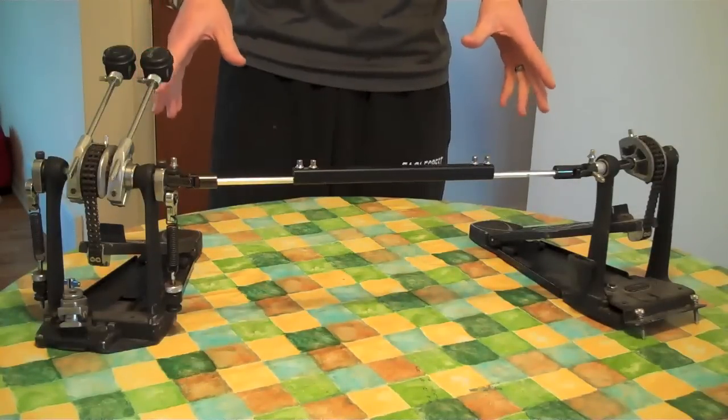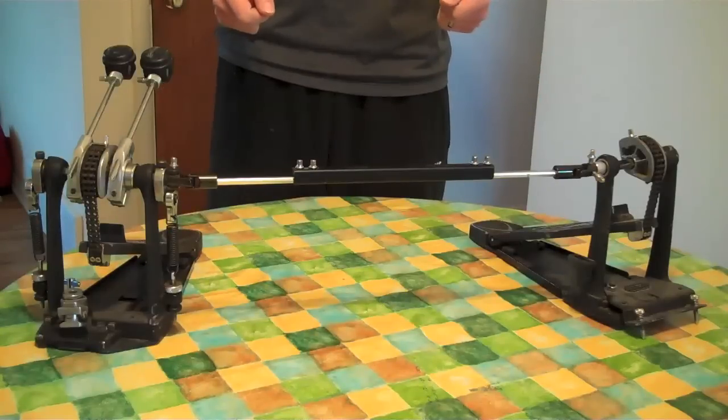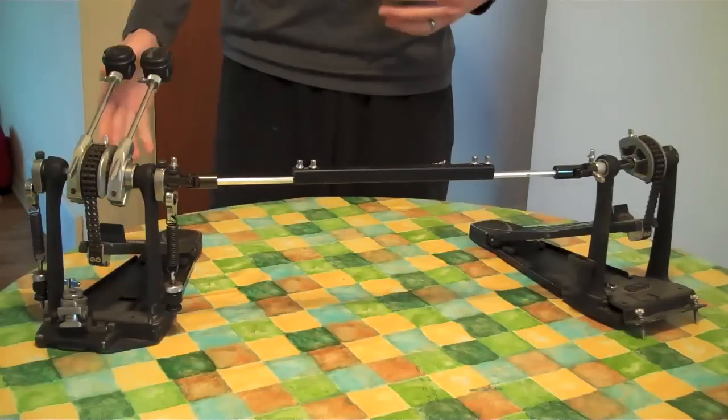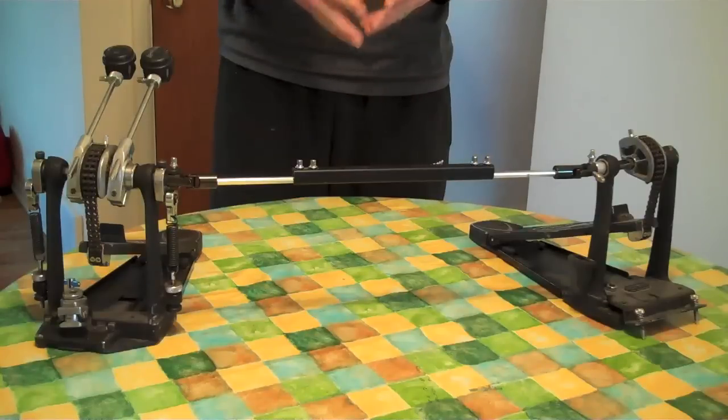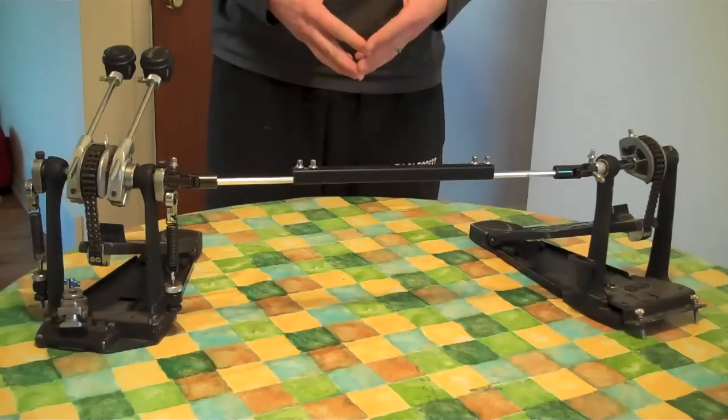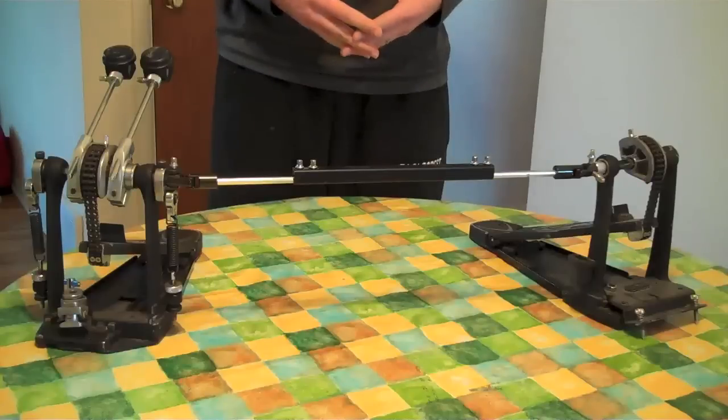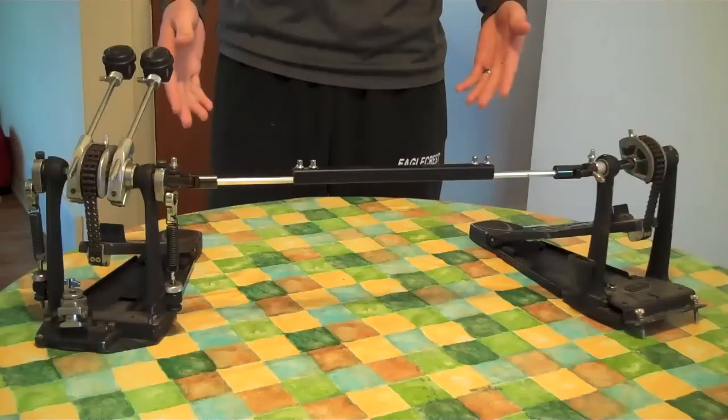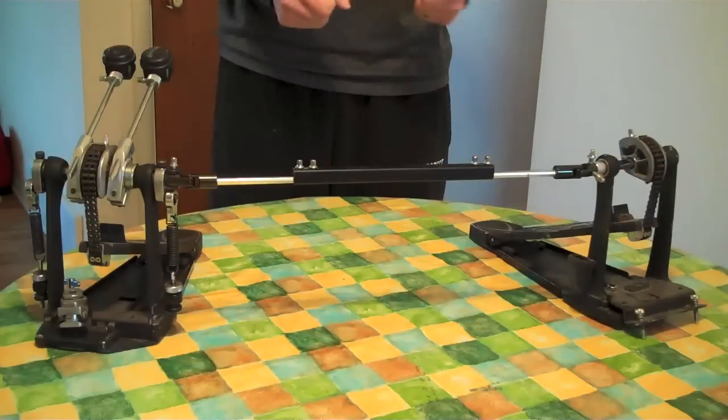My basic pedals are Tama Iron Cobra Power Glide, obviously double, right-handed. They're from about 2000 or 2001, which makes them probably 13, 14 years old, which means that while they may not be the most expensive, they actually are incredibly durable.